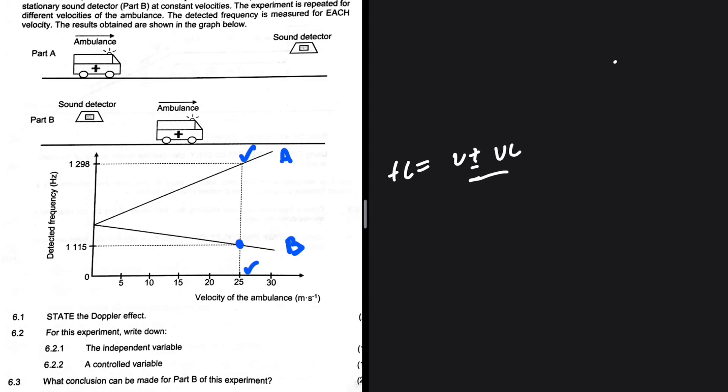For 6.4, calculate the speed of sound in part a. Let's look at our graph. We have part a and part b — we can start with either. In part a, the ambulance is moving towards the detector. We have a velocity of 25 m/s and a corresponding detected frequency. We don't have the emitted frequency fs. The Doppler formula is: f_L = [(v ± v_L) / (v ± v_s)] × f_s.